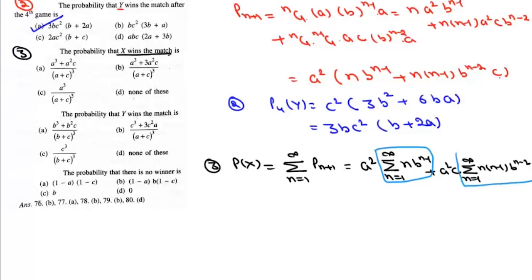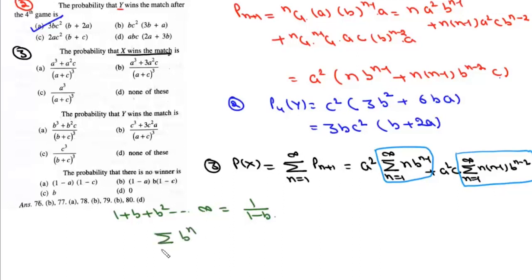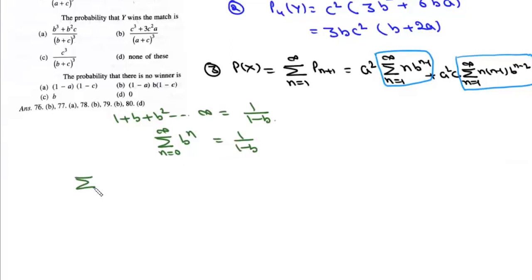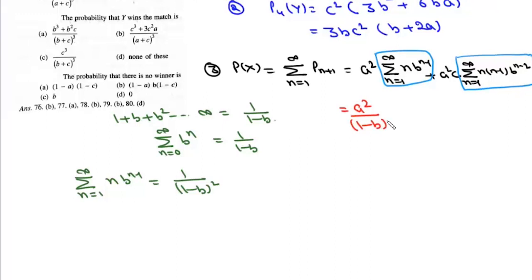We know the geometric series: Σ(n=0 to ∞) b^n = 1/(1-b). Differentiating both sides with respect to b gives Σ(n=1 to ∞) n·b^(n-1) = 1/(1-b)². So the first series contributes a²/(1-b)².